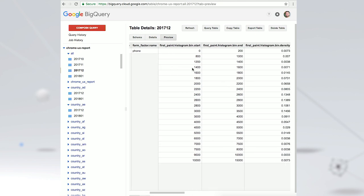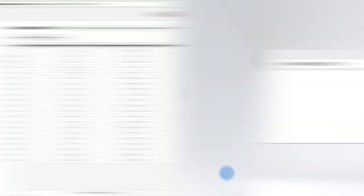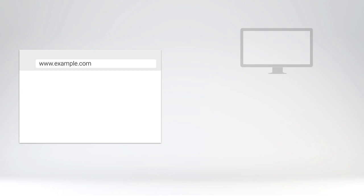Each dataset is divided into monthly tables, each with several core fields. The origin of the website, which is unique to the protocol and domain. The form factor of the user's device, broken down by phone, tablet, or desktop.